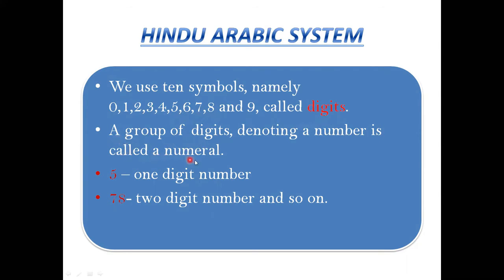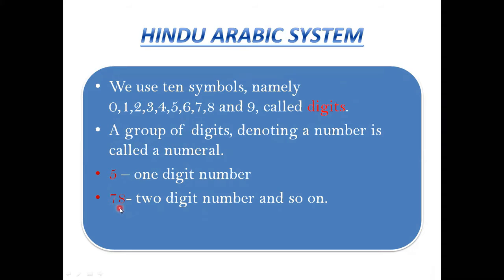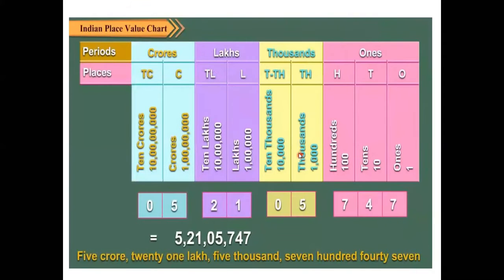A group of digits is called a numeral. If a number has only one digit, it is called a one-digit number — for example, 5. If we take two digits, 7 and 8, the number is 78, which is a two-digit number. Now we will see the place value chart of the Hindu Arabic system.